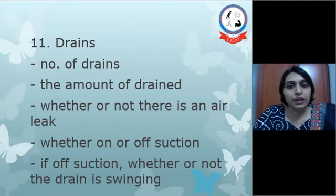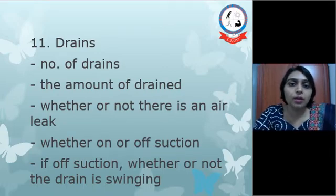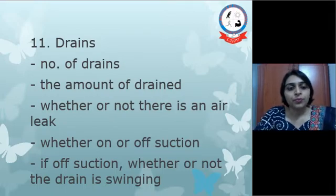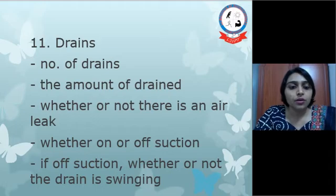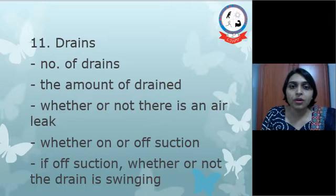Lastly, we have to check for the drains — the number of drains especially. In a case of lobectomy, there will be two drains: one from the pleural cavity and one from the area from where the lobe has been removed. The number of drains should be noted, and we need to notice the amount of drainage. Whether or not there is an air leak, whether or not there is use of a suction pump, and if off suction, whether or not the drain is swinging — we need to check for its patency.